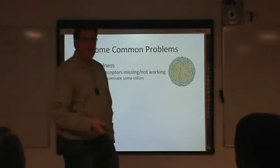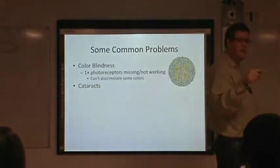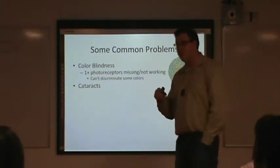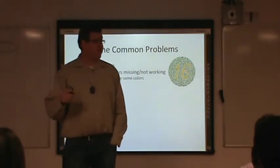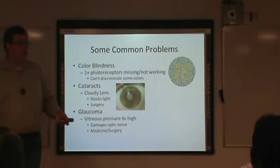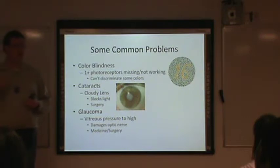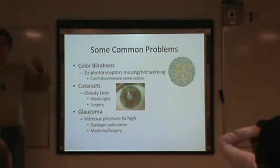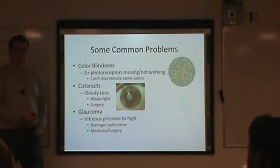Cataracts: the lens gets cloudy, blocking the light and making it harder to see. People often have surgery for this. Glaucoma is when the pressure of the fluid inside your eye is too high, and over time this can damage the retina and optic nerve, which carries signals from the retina to the brain. People treat glaucoma with medicine and surgery — one popular treatment in California and some other states is medical marijuana, which decreases pressure in the eyes.